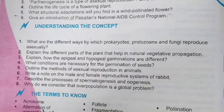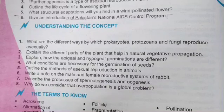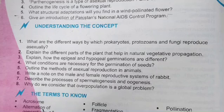The fifth statement: outline the methods of asexual reproduction in animals. The answer is on page number 70, which covers different methods including budding, spore formation, fragmentation, and parthenogenesis.